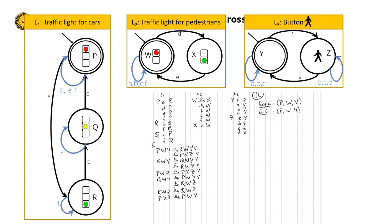P, W, Y was the initial state, already covered. For Q, W, Z: Q allows C and F; W allows C and F; but Z allows only C. So C is the only action enabled. C leads Q to P, W to W, and Z to Z. Q, W, Z is done. I have no new states, so I can start drawing.